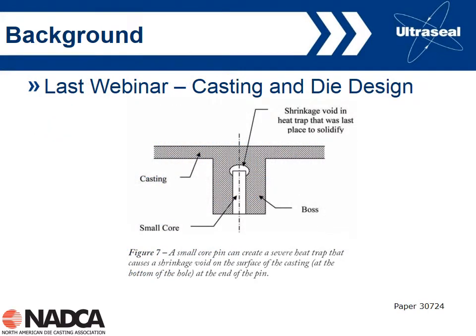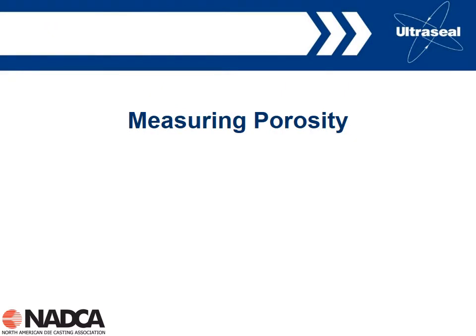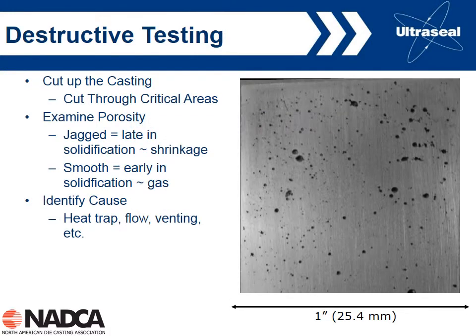In the last webinar we also talked about die design. One example was a heat trap where, if you have a long skinny core, you can attract shrinkage pores to the hot spot created by the core — and potentially also attract gas to that pore. In this webinar we're taking it one step further: we assume the casting is now in production and we need to measure the level of porosity and develop techniques to keep it within acceptable limits. This involves measuring the number of pores and their size, because if we can't measure the amount of porosity, we don't know whether or not it's within acceptable limits.